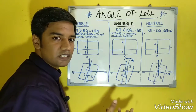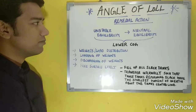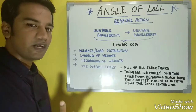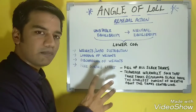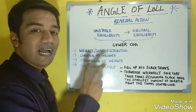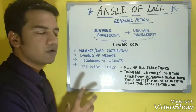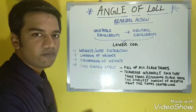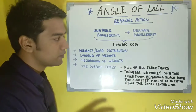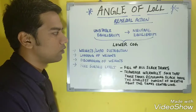We will now look into the remedial actions needed for angle of lull. The remedial actions required are those for unstable equilibrium as well as neutral equilibrium. The primary action required is to lower the center of gravity in order to get a positive GM. We want KM to be greater than KG — those are the conditions of stable equilibrium we are looking for.